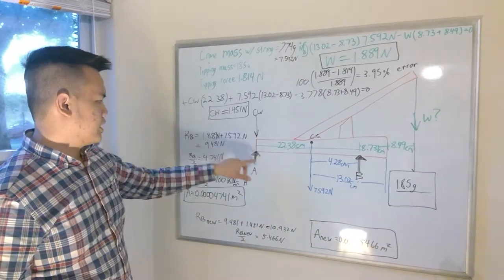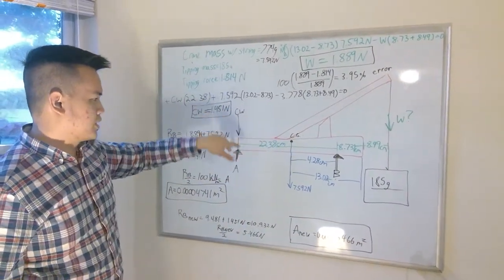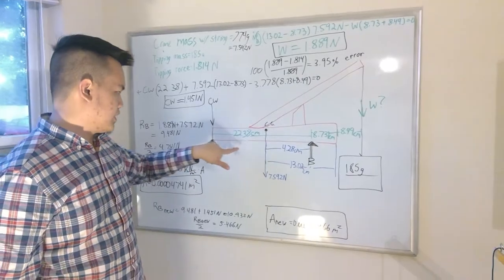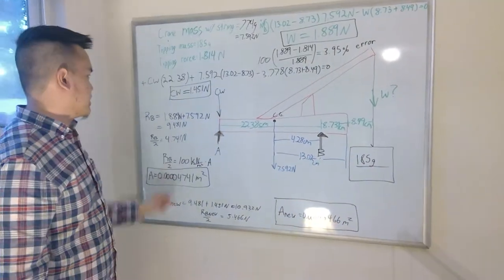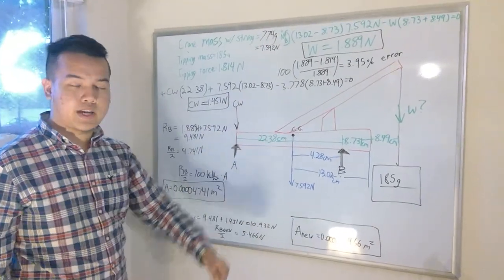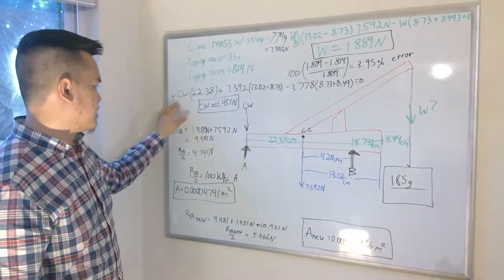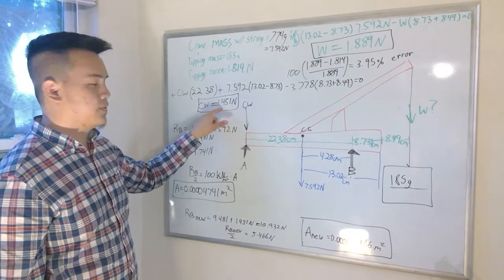For the counterweight, you take the force, multiply by the distance from a to b, which is 22.38 centimeters, and that's counterclockwise as well, that's why it's positive. Then we found out to be 1.45 newtons.